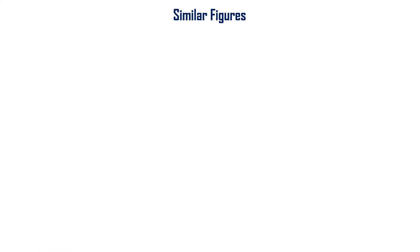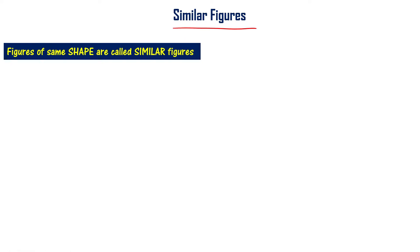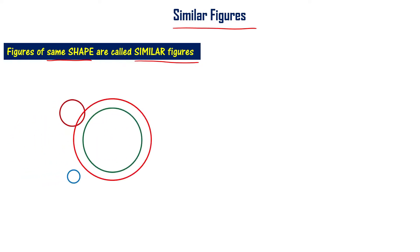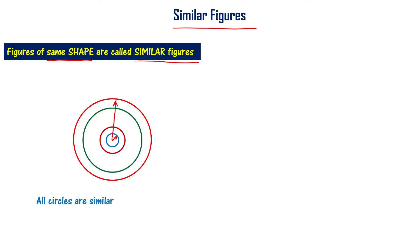Let us now learn about similar figures. Figures of the same shape are called similar figures. For example, you can make circles of different sizes, or circles of different radii. The shape remains the same, and for that reason we say that all circles are similar.